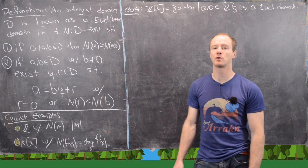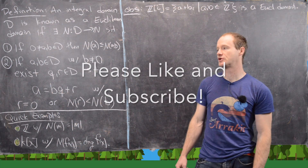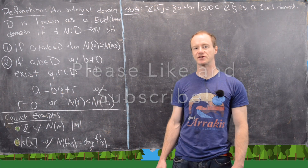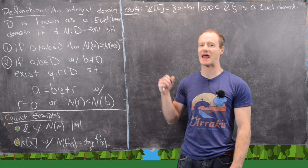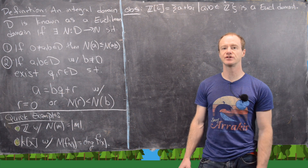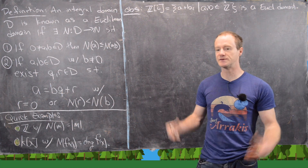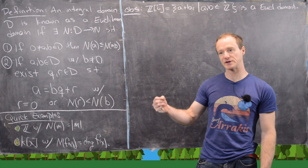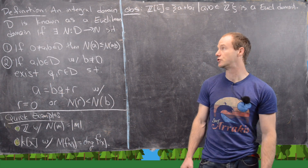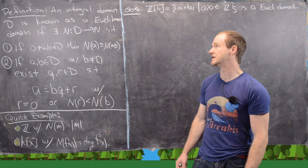We've spent a couple videos exploring factorization within integral domains, and we've come up with the notion of a unique factorization domain and a principal ideal domain. We want to introduce a new structure in this video that moves on from a principal ideal domain to something even nicer, called the Euclidean domain. Let's go ahead and look at the definition.